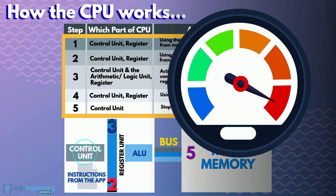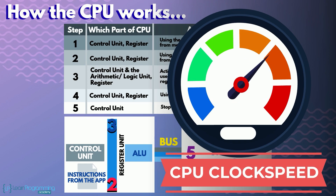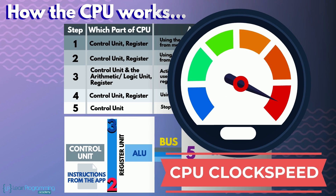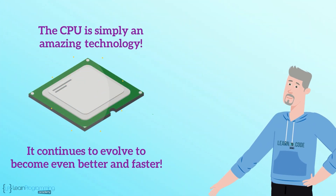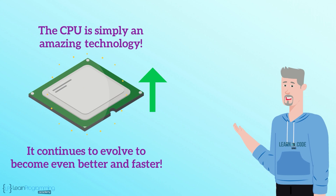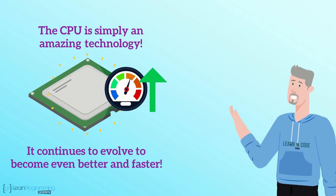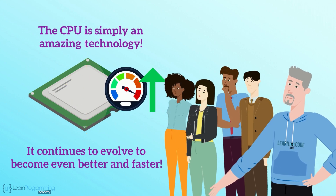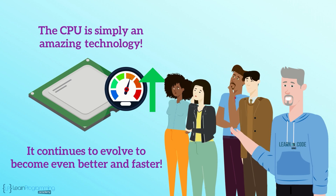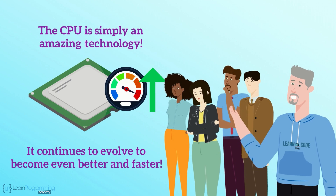You may have heard of CPU clock speeds — the clock speed determines the timing in which the control unit does each of its actions. The CPU is simply an amazing technology, and it continues to evolve to become even better and faster to keep up with consumers demanding that the computer do so much more than it used to just a few years ago.